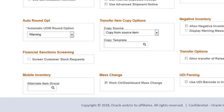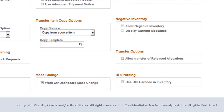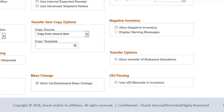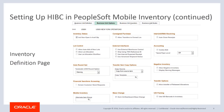If you use Express Issue and Express Put-Away Transactions using the Classic interface, select the Use UDI Barcode and Inventory checkbox. However, if you create these transactions using PeopleSoft Mobile Inventory, you do not need to select this checkbox. After selecting the options discussed so far, you can proceed to set up HIBC barcode support in PeopleSoft Mobile Inventory.